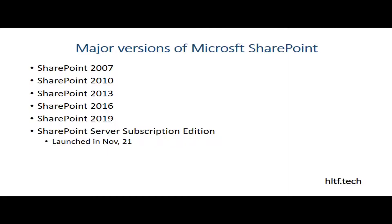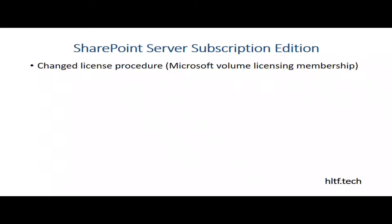In previous versions — 2010, 2013, and up till 2019 — SharePoint used a licensing procedure that assigned a license key to install your SharePoint environment, whether standard or enterprise. Recently, Microsoft has changed this licensing procedure. It has given SharePoint Server Subscription Edition access to all members who have a valid Microsoft Volume Licensing membership, so you can grab the software from your Volume Licensing portal.